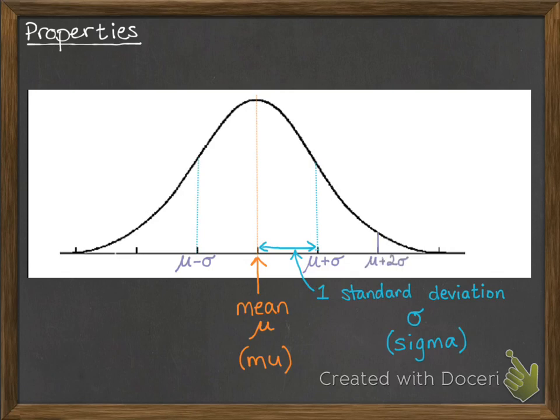This one up here is mu plus two sigma, so that's two standard deviations above the mean. And down the other side, mu minus two sigma is two standard deviations below the mean.